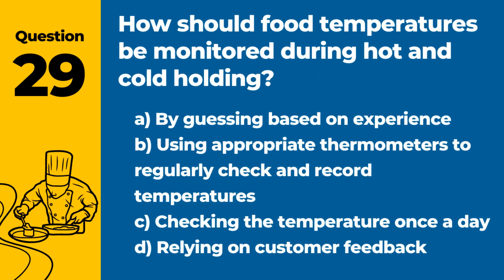Question 29. How should food temperatures be monitored during hot and cold holding? Answer: B. Using appropriate thermometers to regularly check and record temperatures. Regular monitoring ensures food is held at safe temperatures.